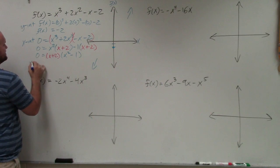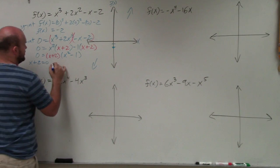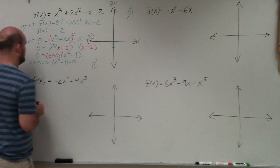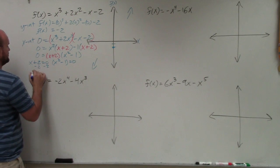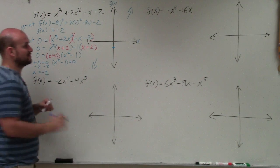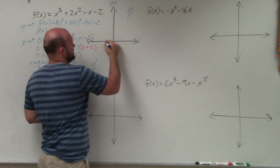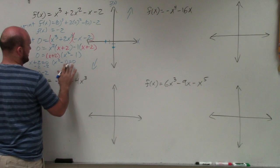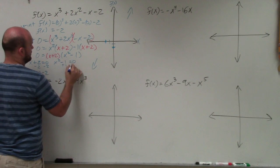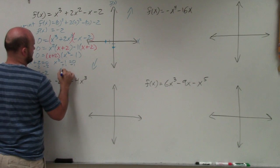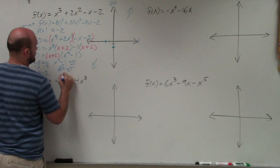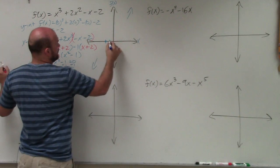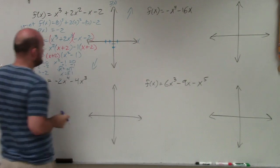Now I use the zero product property to set both of my factors equal to 0. Subtracting 2, x equals negative 2 — so that's one of my zeros, and I go over on my x-axis and put a dot at negative 2. Then over here, I add 1 on both sides: x² equals 1, take the square root, so x equals plus or minus 1. Therefore, I have negative 1 and positive 1.